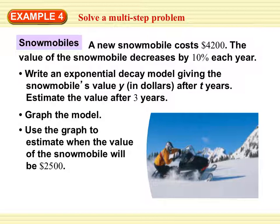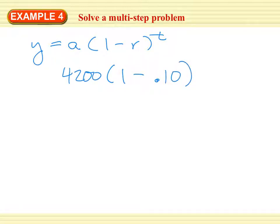When a real-life quantity decreases by a fixed percent each year or other time period, the amount y of quantity after t years can be modeled by the equation, where a is the initial amount and r is the percent decrease expressed as a decimal. Note that the quantity 1 minus r is the decay factor. So this is what we're working with.